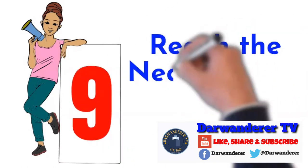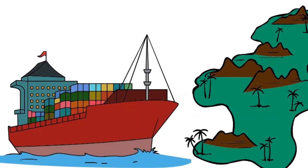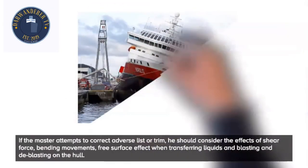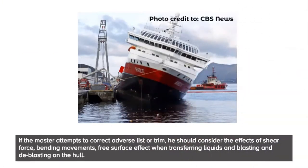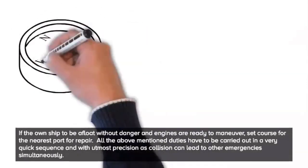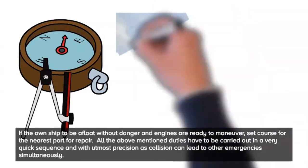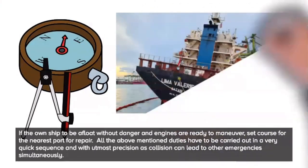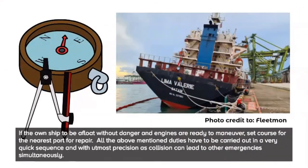9. Reach the nearest port, if possible. If the master attempts to correct adverse list or trim, he should consider the effects of shear force, bending moments, free surface effect when transferring liquids, and ballasting and de-ballasting on the hull. If the own ship to be afloat without danger and engines are ready to maneuver, set course for the nearest port for repair. All the above mentioned duties have to be carried out in a very quick sequence and with utmost precision, as collision can lead to other emergencies simultaneously.